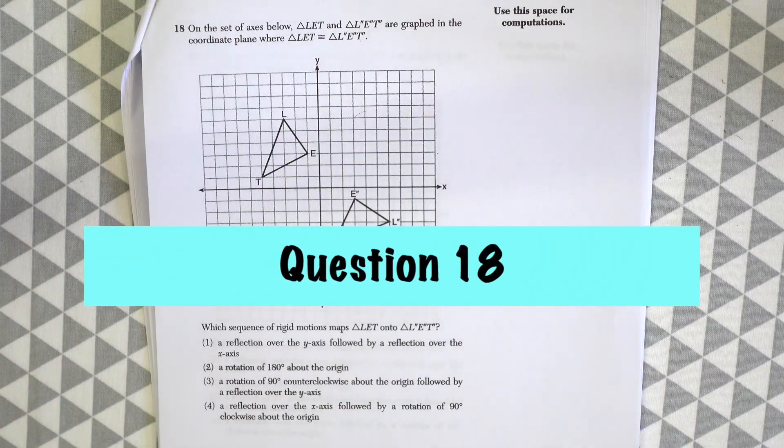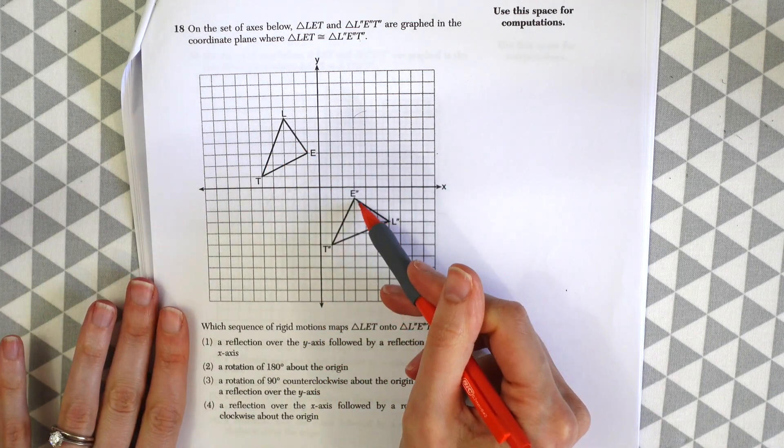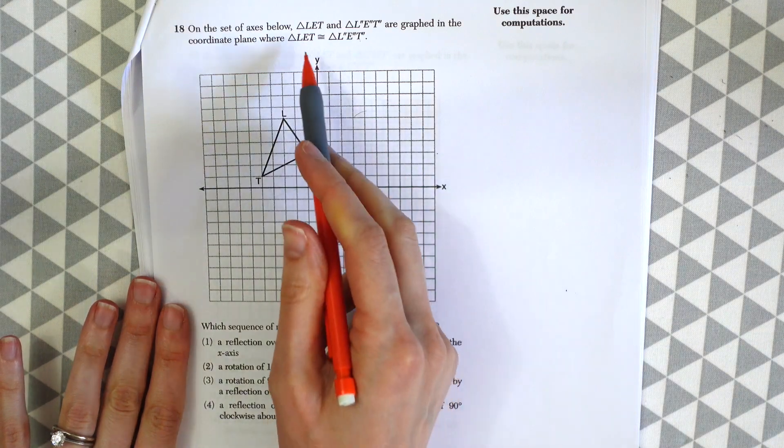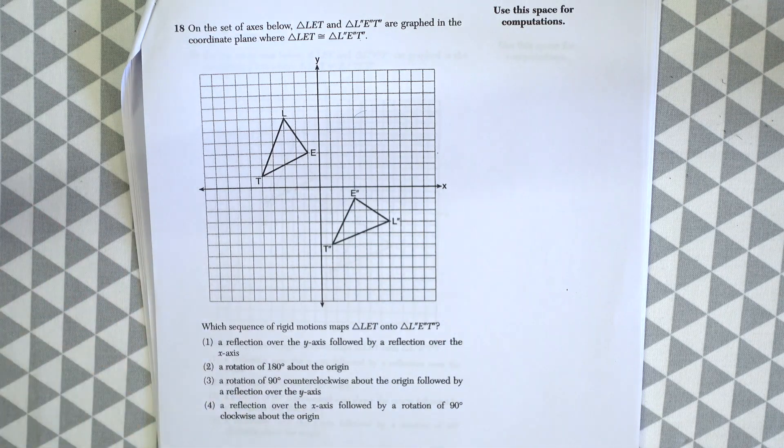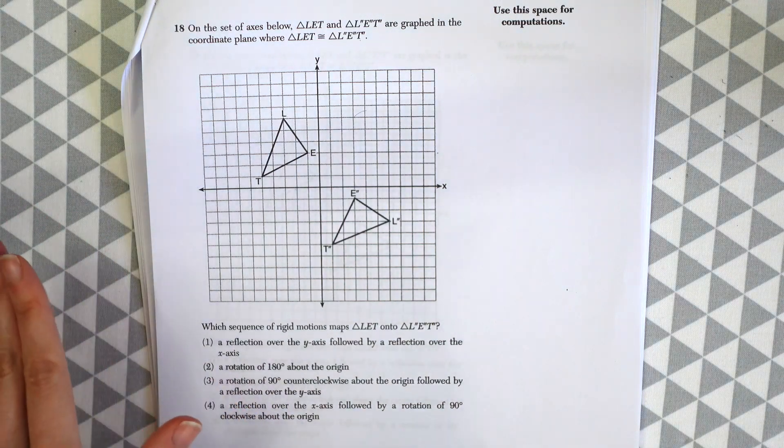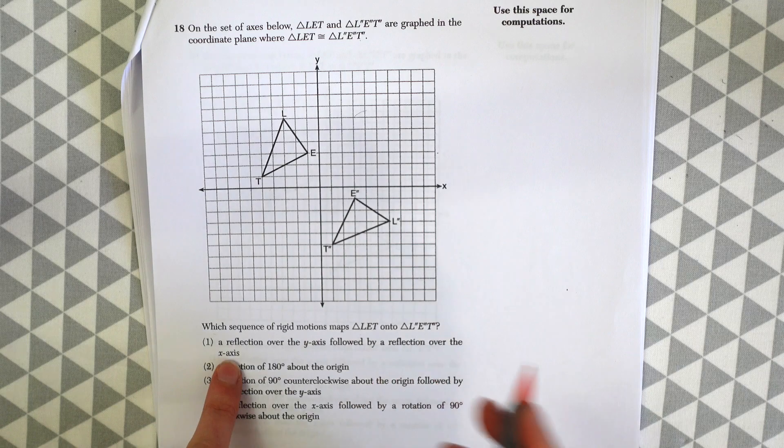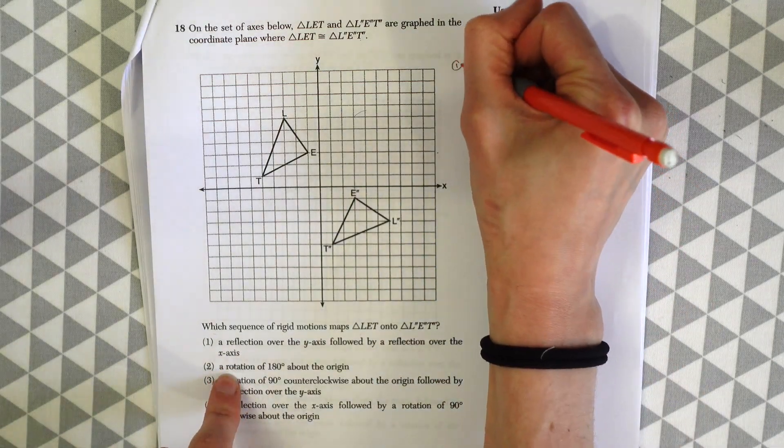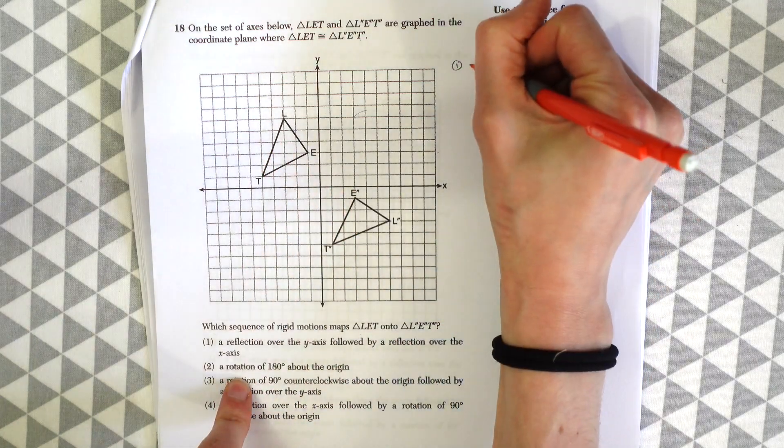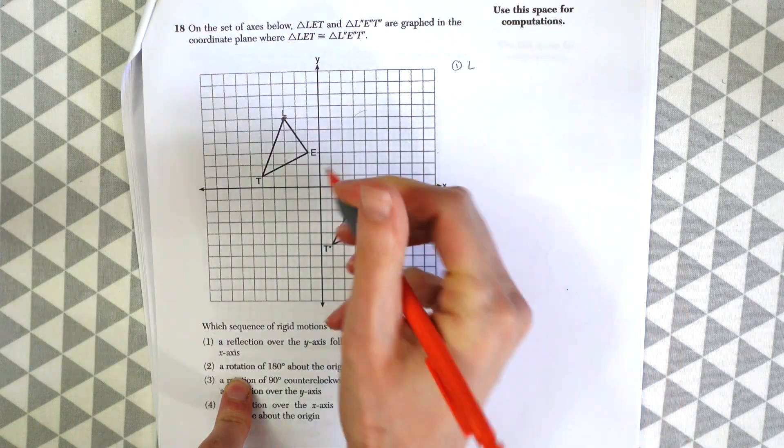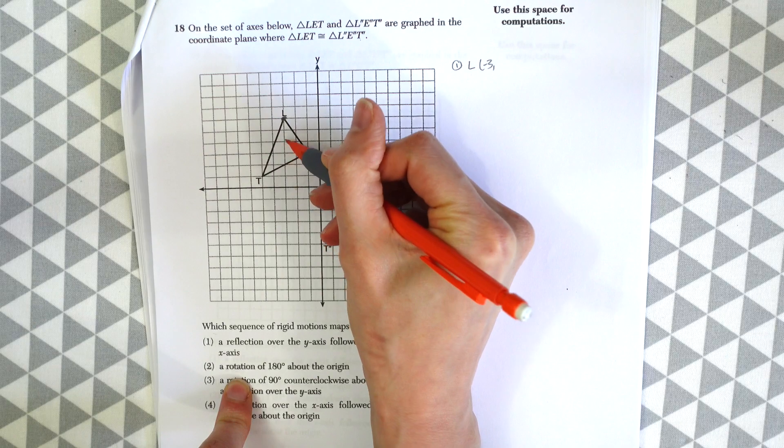On to question 18. On the set of axes below, triangle LET and triangle L double prime, E double prime, and T double prime are graphed in the coordinate plane where triangle LET is congruent. So these two triangles are congruent. So clearly some transformation happened here. They want to know which one happened, and our question is which sequence of rigid motions maps the first triangle onto the next triangle. So let's go through each one. So this is an involved question where we've got to test everything out. So instead of testing every point out, let's go with one point. So let's just always test out and start with L. So L has the value of negative 3, 6.